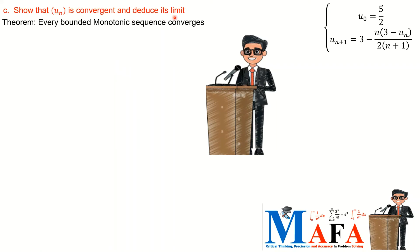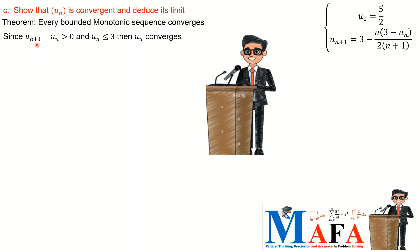Part C asks us to show that u_n is convergent and to deduce its limit. The theorem states: every bounded monotonic sequence converges. If a sequence is monotonically increasing and bounded from above, it converges to the upper bound. The reverse holds for monotonically decreasing sequences bounded from below. In this case, u_{n+1} minus u_n is greater than or equal to 0 so u_n is monotonically increasing, and it is bounded from above by 3, so it converges. The theorem already tells us the limit is 3.